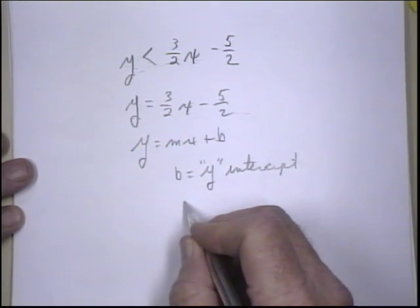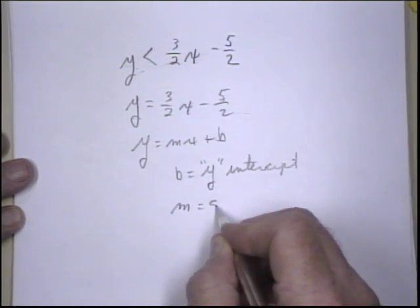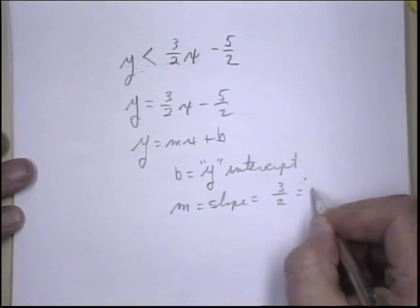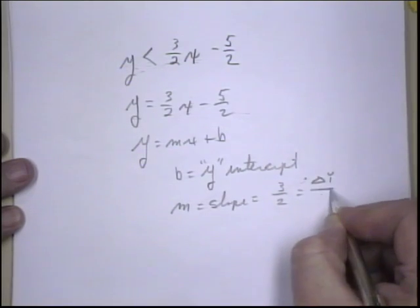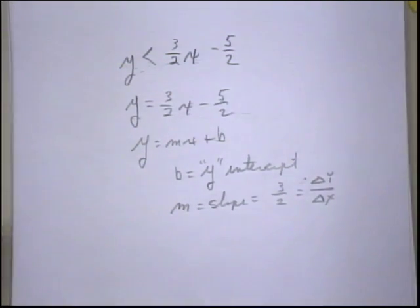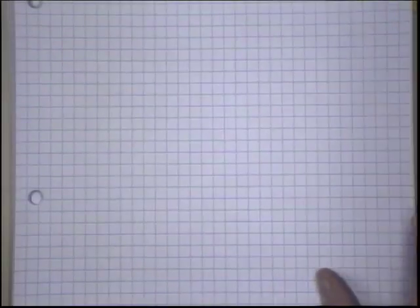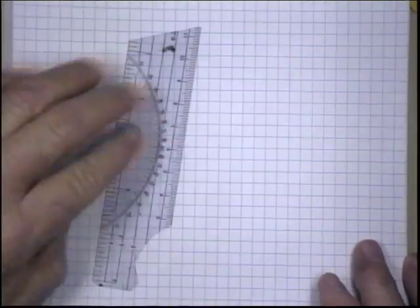And our slope, M, is the slope, and that's 3 over 2, and that's delta Y over delta X. So I can go ahead and graph this on some graph paper.